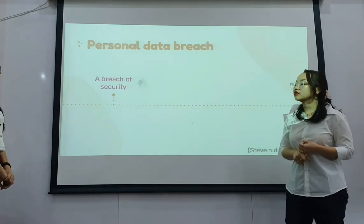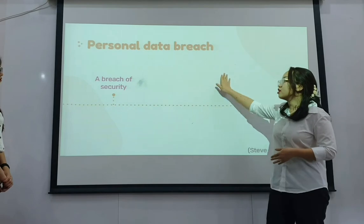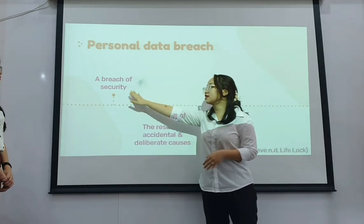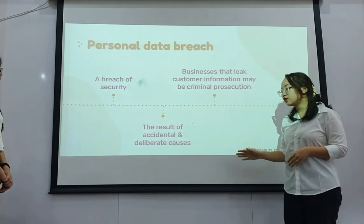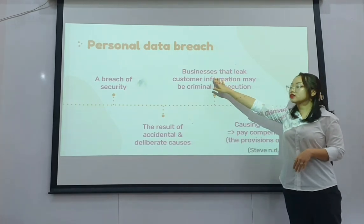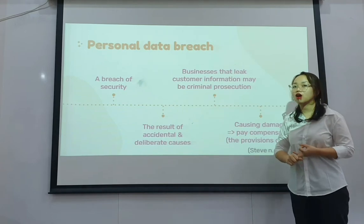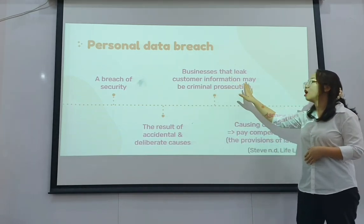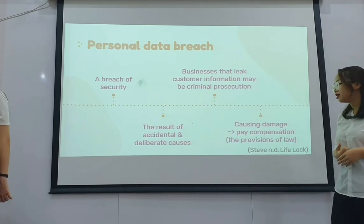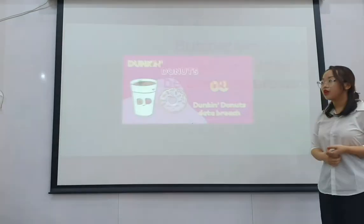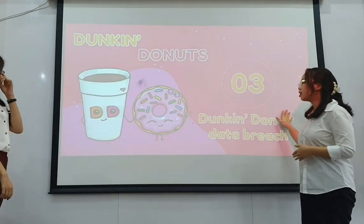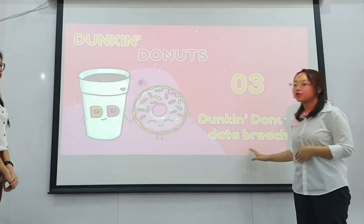Personal information can be linked to a personal data breach. A personal data breach means a breach of security that results from accidental and deliberate causes. If a business sells, buys, or discloses and links customer information, they may face criminal prosecution. If damages are caused, they have to pay compensation according to the provisions of law. To understand more about data security and data breach, we move to part 3 — the Dunkin' Donuts data breach.